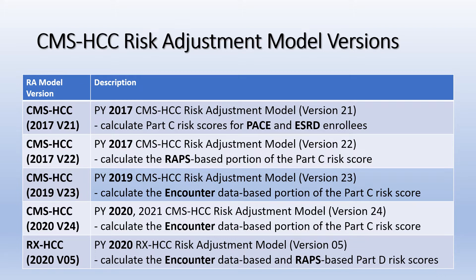CMS will blend 75% of the risk score calculated with the 2020 ESRD models with 25% of the risk score calculated with the 2019 ESRD models. For Part D non-PACE risk scores for Payment Year 2021, CMS will use the 2020 RxHCC V05 model to calculate both the encounter data-based and the RAPS-based risk scores. Encounter data-based risk scores will be calculated with diagnoses from encounter data, RAPS inpatient data, and FFS. RAPS-based risk scores will be calculated using RAPS and FFS diagnoses.